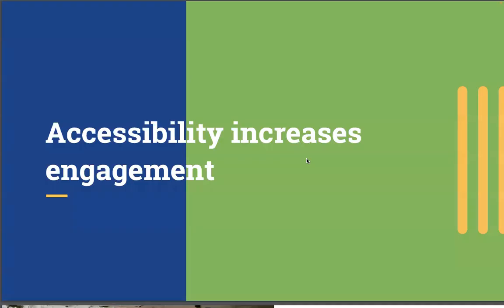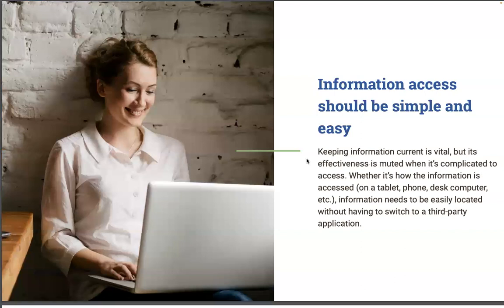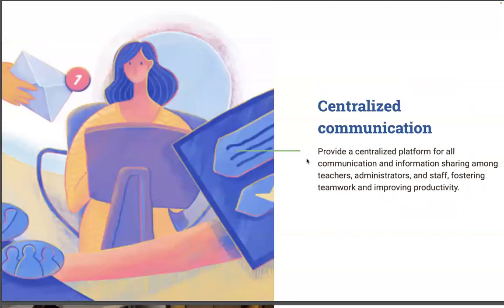Accessibility increases engagement. Keeping information current is vital, but its effectiveness is muted when it's complicated to access. Whether it's how the information is accessed on a tablet, a phone, or desktop computer, information needs to be easily located without having to switch to a third-party application. This provides a centralized platform for all communication and information sharing among teachers, administrators, and staff, fostering teamwork and improving productivity.